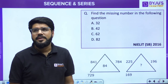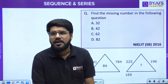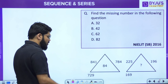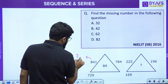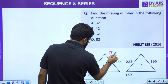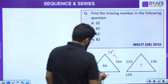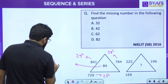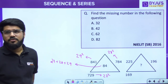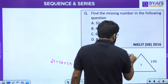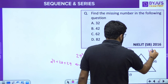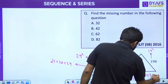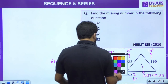Questions can also be in the form of pictures, but ultimately number-based. Find the missing number in a triangle. The outer numbers 841 = 29², 784 = 28², 729 = 27², and the middle term is 27 + 28 + 29 = 84. Similarly: 225 = 15², 196 = 14², 169 = 13². So the missing number is 13 + 14 + 15 = 42. Option B is correct.